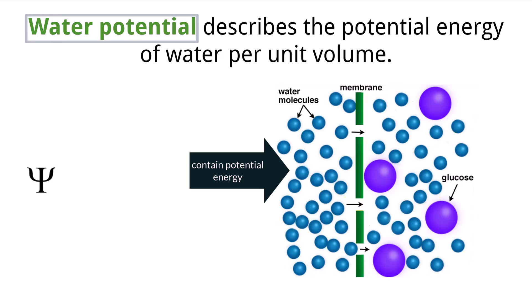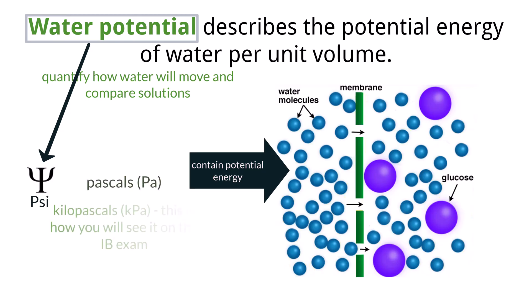This is important when trying to quantify how and why water moves from one place to another and compare water of different systems. Water potential is represented by the symbol psi and is measured in pascals, which are usually kilopascals.